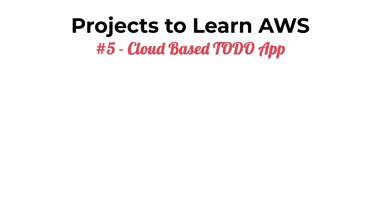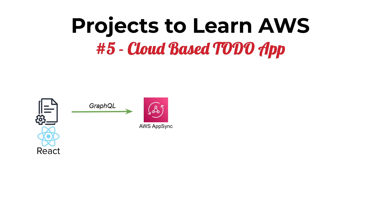Our final project is a cloud-based to-do app. To-do apps are a very common example when learning a new front-end framework, but what if we want to persist data sets to the cloud rather than just having it work on localhost? We can leverage AWS to build a cloud-based version. It starts with a React application or any other front-end framework you choose, which you can keep local or deploy as a static website to Amazon S3. For the back-end APIs, one option is to use GraphQL — in that case we leverage AWS AppSync, which is a managed GraphQL server that allows you to perform different types of operations.